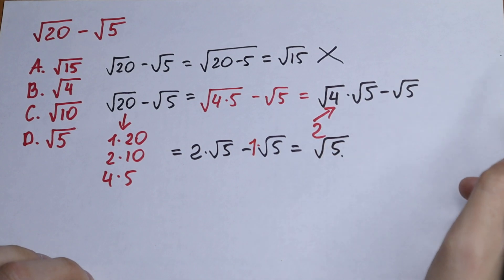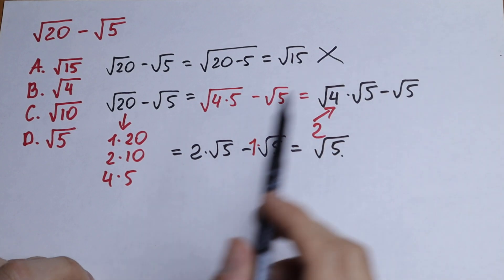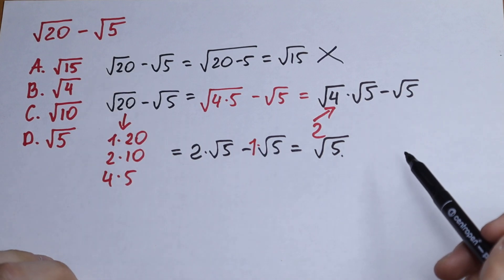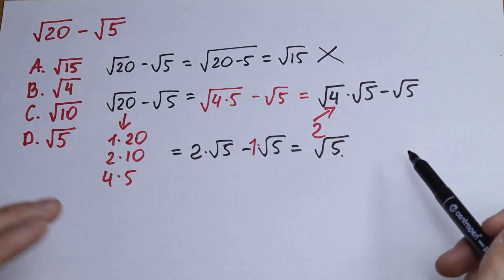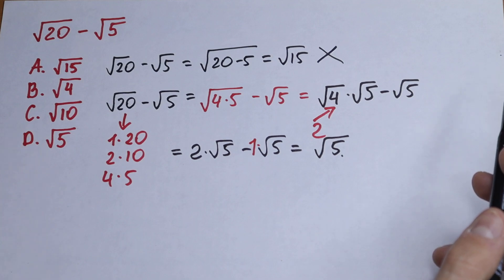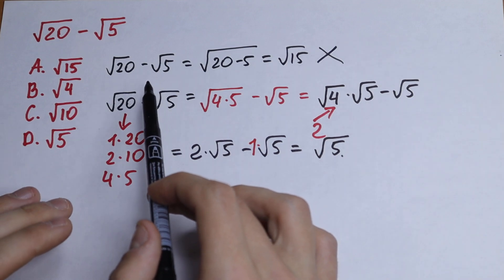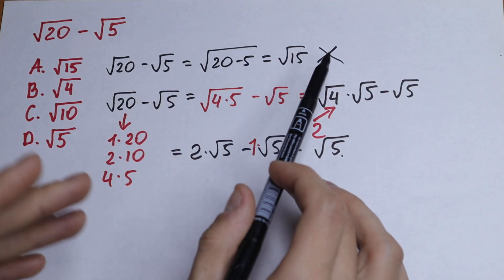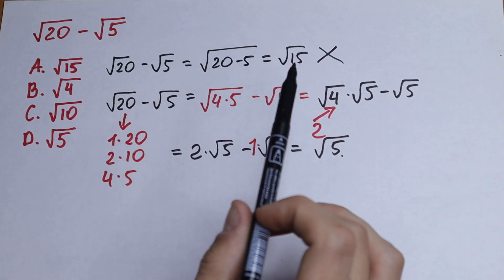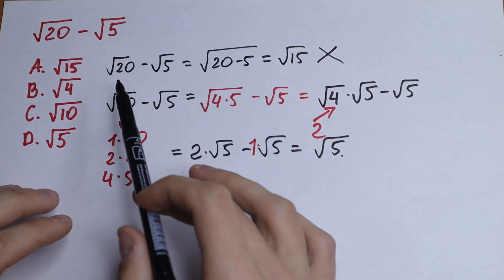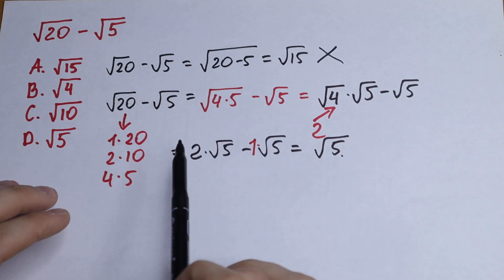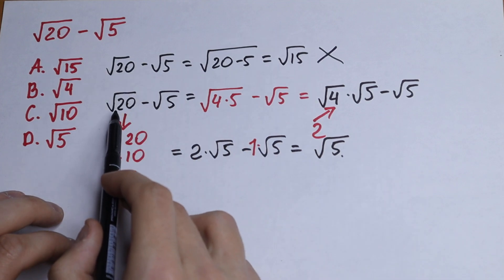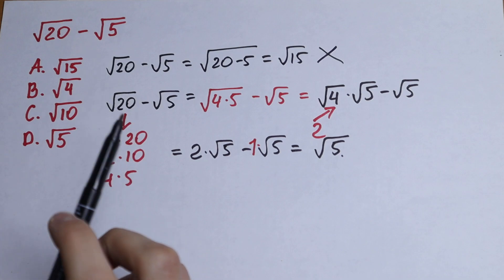This is our answer — Option D — square root of 5. Nothing hard! I recorded this video because a lot of students make the mistake of subtracting under the radical. This is the worst mistake I've ever seen, so forget that way. The answer is square root of 5 — just simplify square root of 20 a little bit.